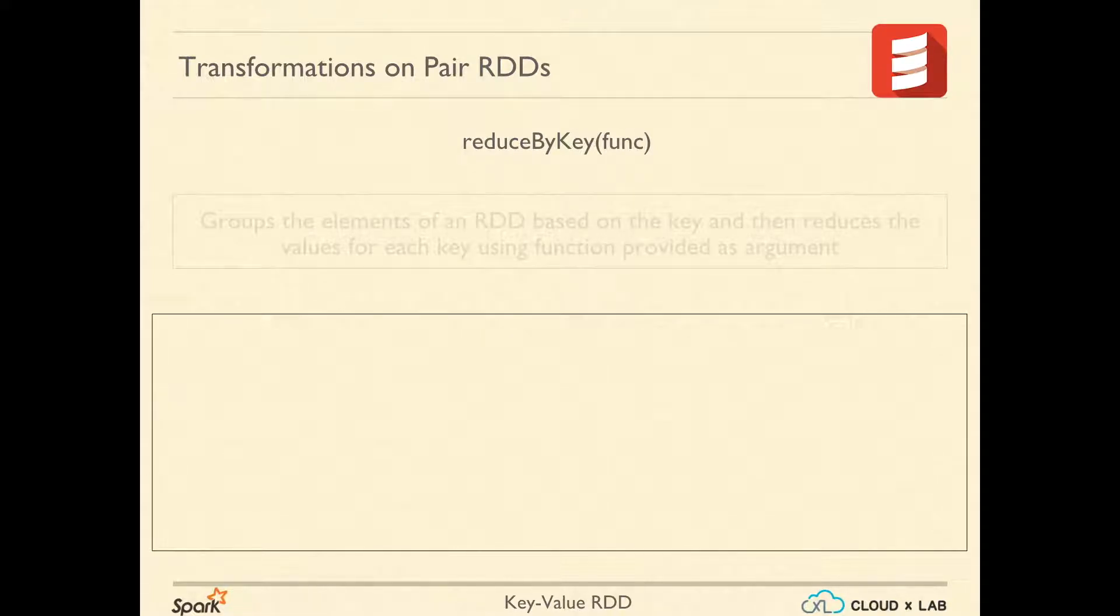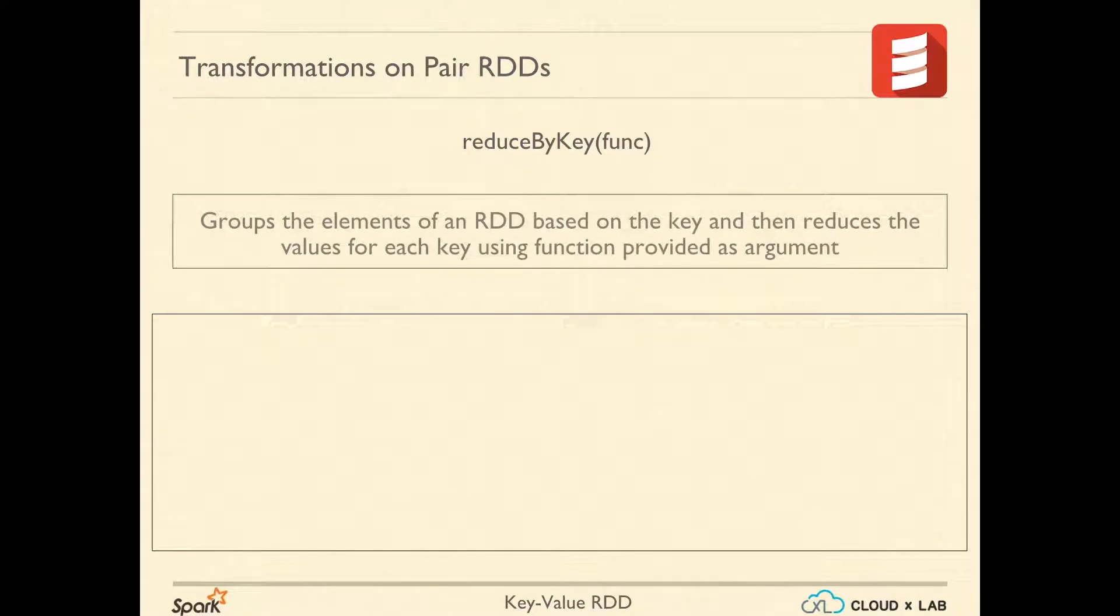The first very important function a key value RDD provides is reduceByKey. This reduceByKey is very similar to Hadoop's reduce. The reduceByKey is a transformation unlike reduce which is an action.